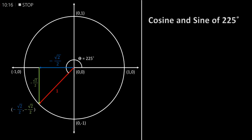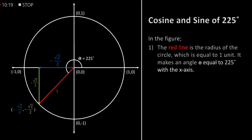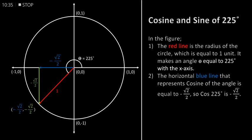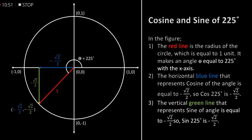Cosine and sine of 225 degrees. In the figure, the red line is the radius of the circle which is equal to 1 unit. It makes an angle theta equal to 225 degrees with the x-axis. The horizontal blue line that represents cosine of the angle is equal to minus square root of 2 by 2, so cos of 225 degrees is equal to minus square root of 2 by 2. So sin of 225 degrees is equal to minus square root of 2 by 2.